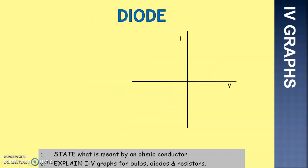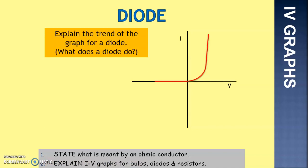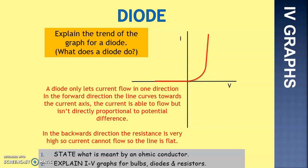Now the trend line for a diode. On the left-hand side of the graph, even if we put the voltage up as high as possible, the current will not flow. On the other side, as we increase the voltage, the current increases by increasing amounts — it's not a fixed relationship. The right-hand side shows current flowing in one direction; the left-hand side shows current flowing in the opposite direction. A diode will only let current flow in one direction. In the forward direction, the line curves towards the current axis — current is able to flow but it isn't directly proportional. In the backwards direction, the resistance is very high, so current can't flow and the line is flat.